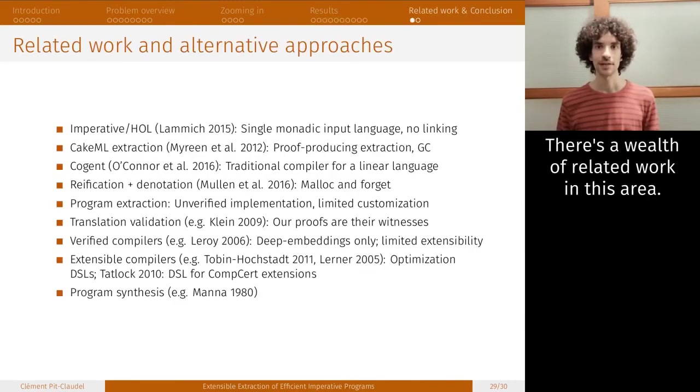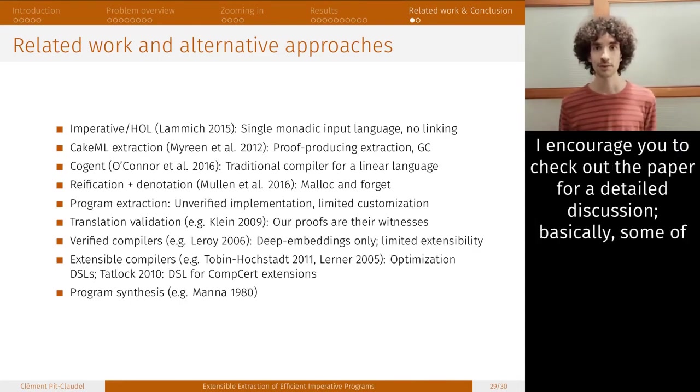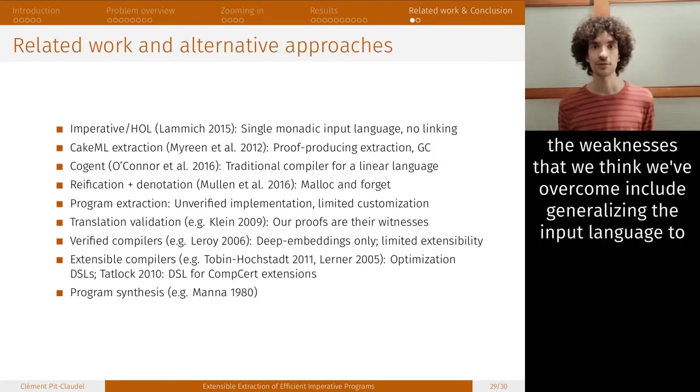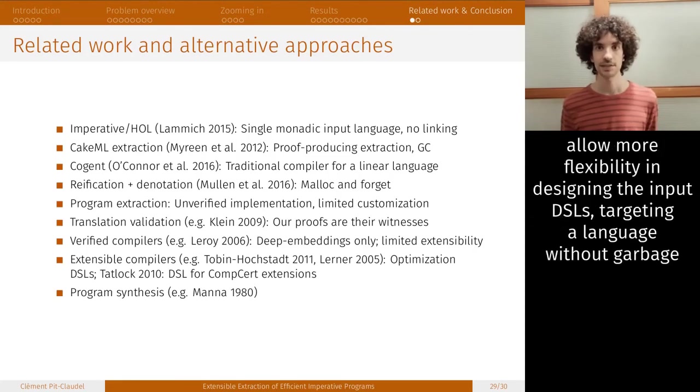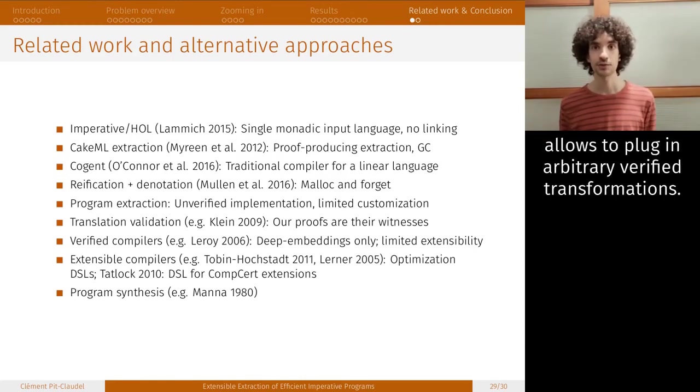There's a wealth of related work in this story. I've put many representative references on this slide in rough order of decreasing relatedness. I encourage you to check out the paper for detailed discussion. Basically, some of the weaknesses that we think we've overcome include generalizing the input language to allow more flexibility in designing the input DSLs, targeting a language without garbage collection, deriving end-to-end proofs, and doing this interactively in a setting that allows you to plug arbitrary verified transformations into your compiler.